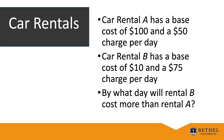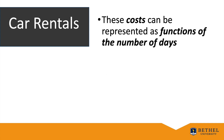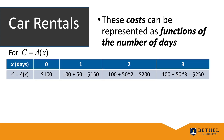Rental B costs more per day, so eventually it will catch up to rental A. These costs can be represented as functions of the number of days. For the function c = A(x), the cost of rental A: when x is 0 the cost is $100 (the base cost); after one day, $150; after two days, $200; after three days, $250.